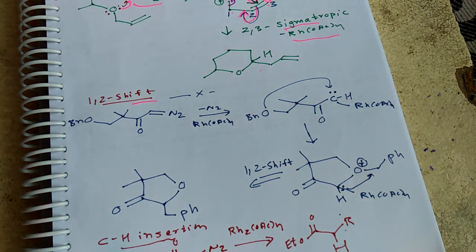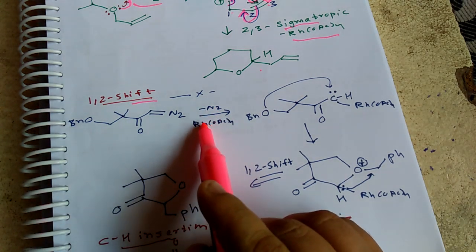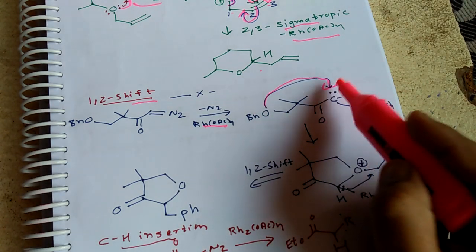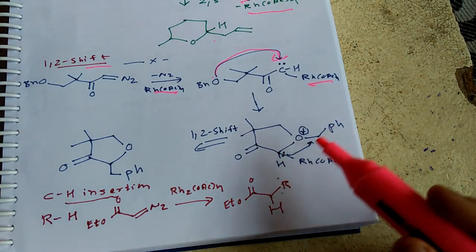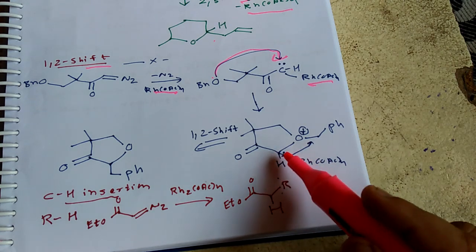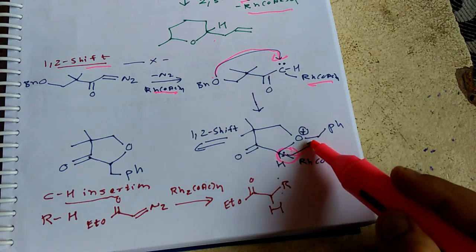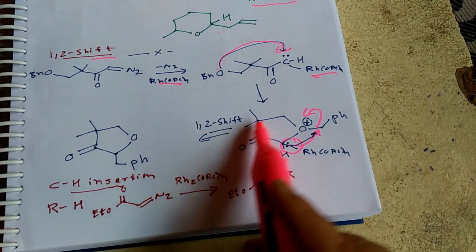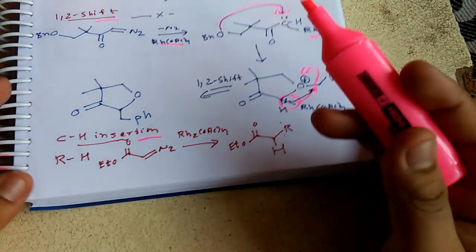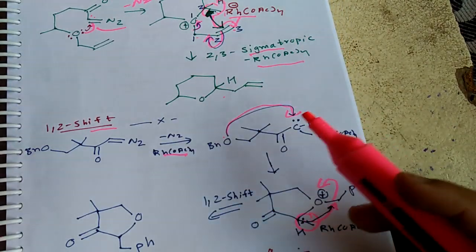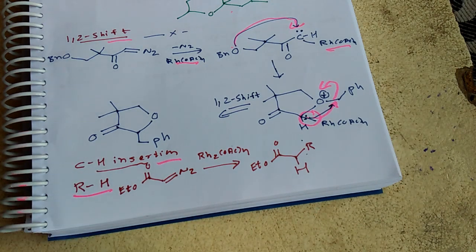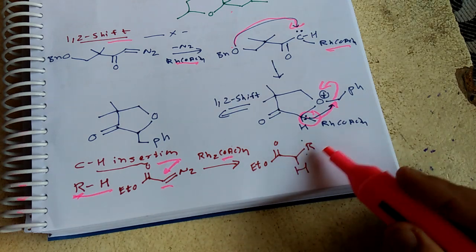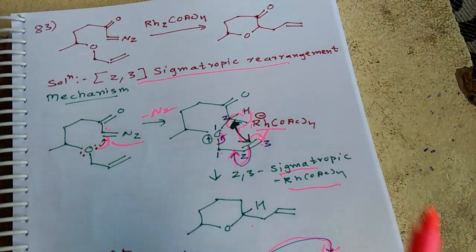To clarify why it is not a 1,2-shift rearrangement: under the same rhodium acetate conditions you would get a carbene stabilized by rhodium acetate, the oxygen nucleophile attacks, giving a different product — this would be a 1,2-shift rearrangement, seen in 2014 or 2015 CSIR papers. CH insertion means a carbene, catalyzed by rhodium, is inserted into a C-H bond of a hydrocarbon. The correct answer here is the 2,3-sigmatropic rearrangement.